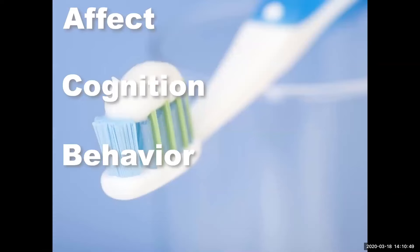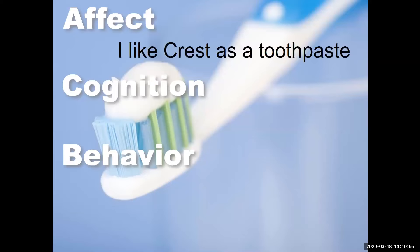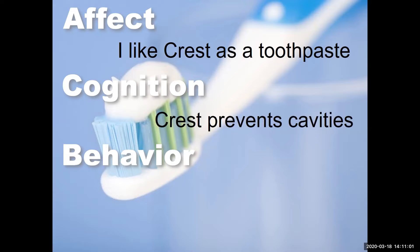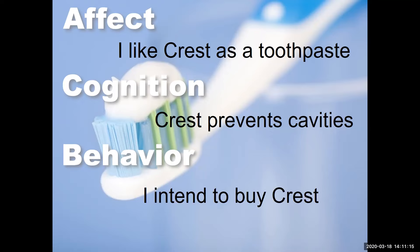Let's look at Crest toothpaste as an example. The affective aspect could be: I like Crest as a toothpaste — you feel good about it. The cognitive aspect, your beliefs about Crest, might be: Crest prevents cavities. And behaviorally you might say: I intend to buy Crest. So this would be a harmonious balance between the three elements of an attitude — you like it, you know something good about it, and you intend to act positively toward the item.